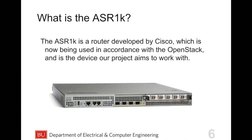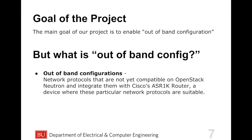We've been talking a lot about the ASR1K. The ASR1K is a router provided by Cisco, which is now being used in conjunction with OpenStack, and is a device our project aims to work with. The goal for our project is to enable out-of-band configurations for such routers on OpenStack. An out-of-band configuration is a networking protocol not yet compatible with OpenStack Neutron, and we plan to integrate them with the Cisco ASR router and apply them onto OpenStack.